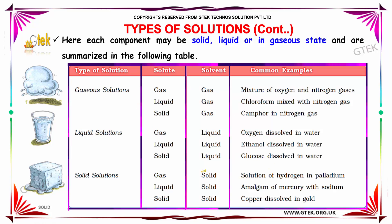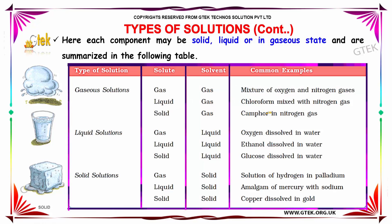Here is a table indicating the types of solutions — what is the solute, what is the solvent, and what is the example. For gaseous solutions: gas in gas forms a mixture of oxygen and nitrogen; liquid in gas is chloroform mixed with nitrogen; solid in gas is camphor in nitrogen. For liquid solutions: gas in liquid is oxygen dissolved in water; liquid in liquid is ethanol dissolved in water; solid in liquid is glucose dissolved in water. For solid solutions: gas in solid is hydrogen in palladium; liquid in solid is amalgam of mercury with sodium; solid in solid is copper dissolved in gold. This is an important table you should note down.